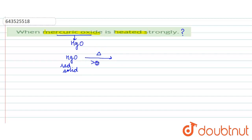The silver colored mercury is produced and oxygen gas is released. The silver colored mercury is produced and oxygen gas is released.